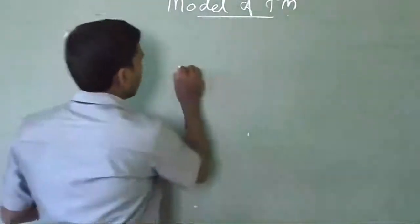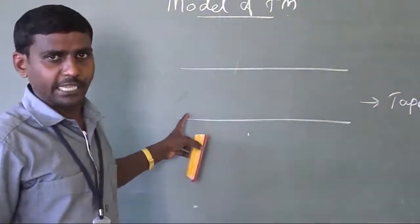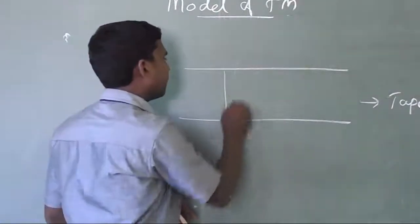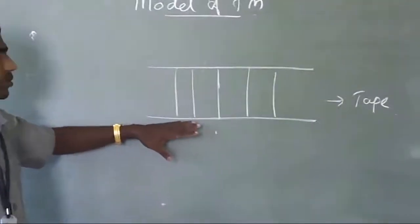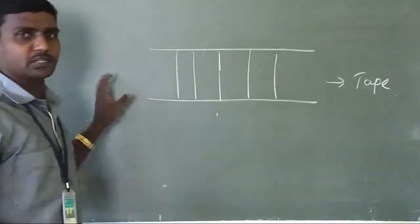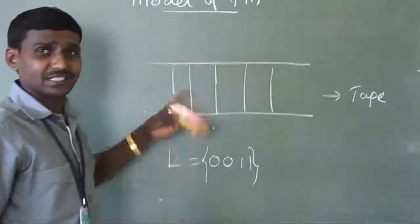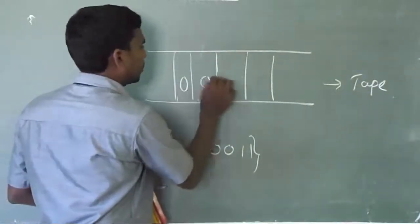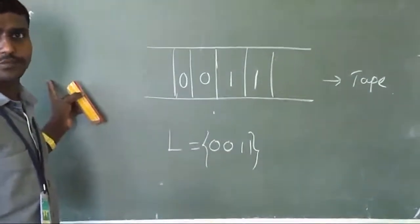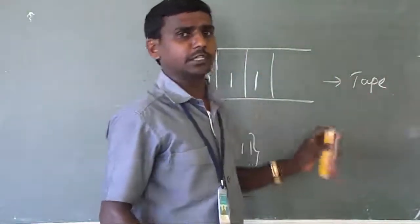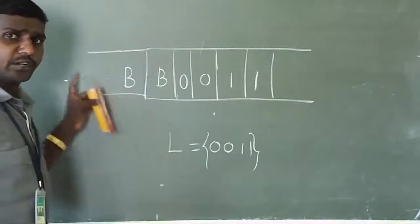A Turing machine consists of a tape. This tape consists of an infinite number of cells. For example, if we take the input L equal to zero zero one one, this input is stored inside the tape as zero zero one one.